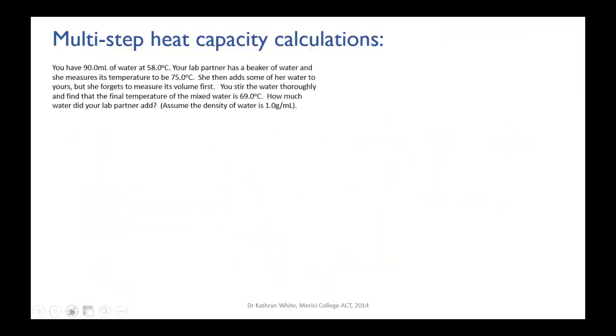Let's try another problem. In this one you have 90 mils of water at 58.0 degrees Celsius, and your lab partner also has a beaker of water and she measures its temperature and finds that it's 75.0 degrees Celsius. Now she adds some of her water to yours but she forgets to measure how much.